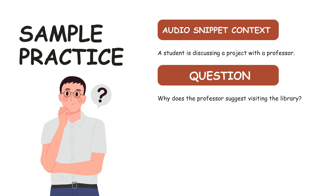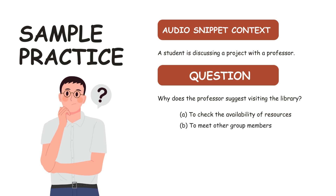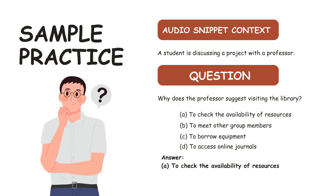Sample practice — Audio snippet context: a student is discussing a project with a professor. Question: 'Why does the professor suggest visiting the library?' A. To check the availability of resources. B. To meet other group members. C. To borrow equipment. D. To access online journals. Answer: A. To check the availability of resources.